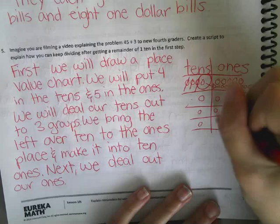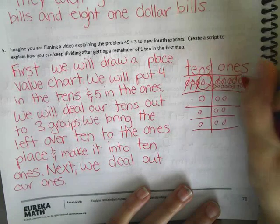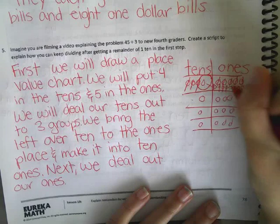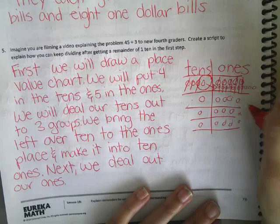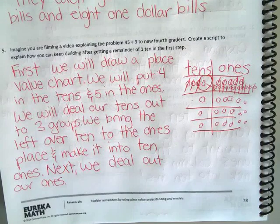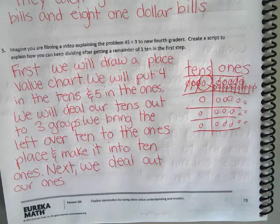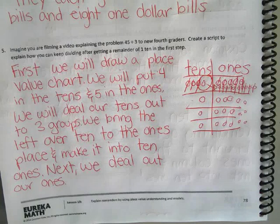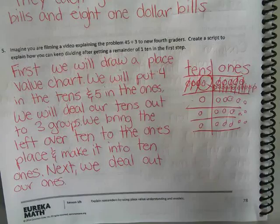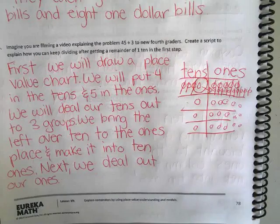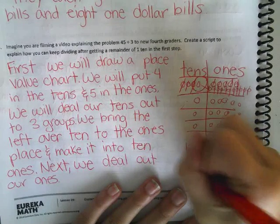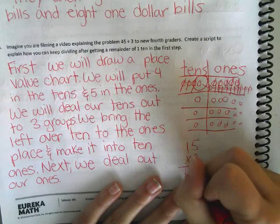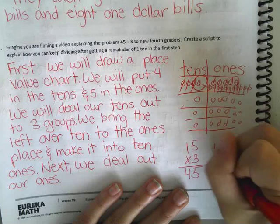Let's deal those out. So what's our answer? What's 45 divided by 3? It should be 15 — no remainder at all. It's really important that you cross things off as you go. We should have ended up with 15, which makes sense because 15 times 3 is 45. So 45 divided by 3 is 15.